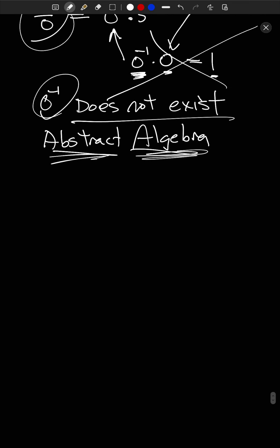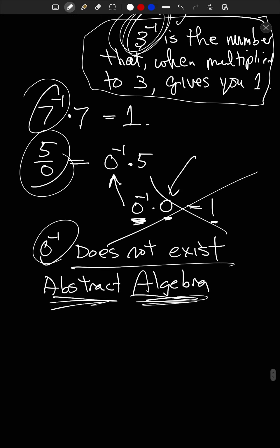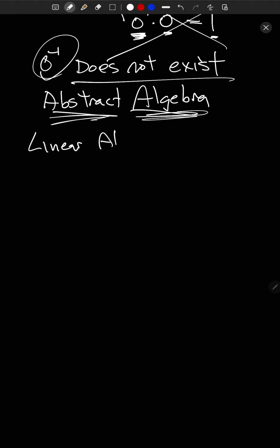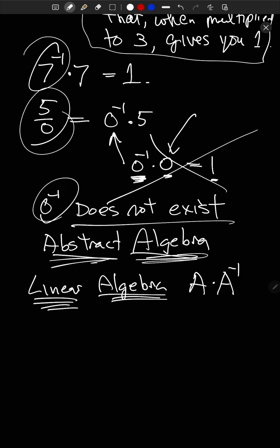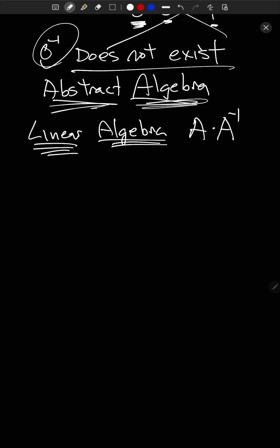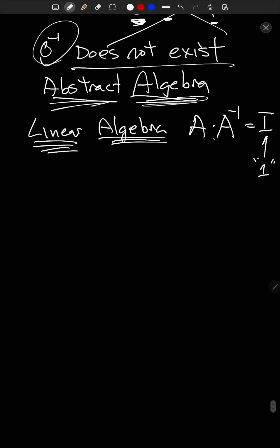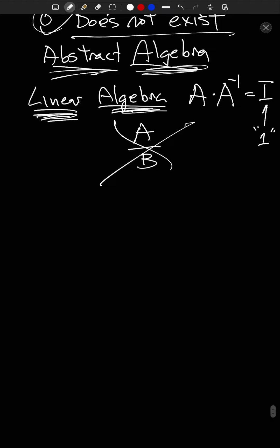Actually, you'll see what we just talked about in linear algebra, where you work with matrices. In certain circumstances, there's such a thing as the inverse of a matrix — A to the minus one — by definition the thing that when multiplied by A gives you the identity matrix, which plays the role of one. And in linear algebra, you'll never write something like A over B, because division really does not exist there.